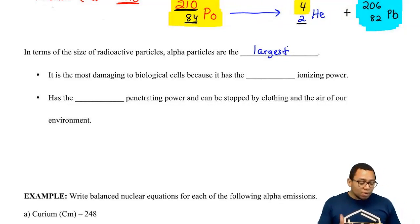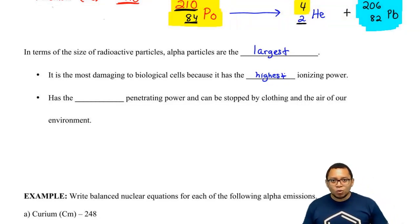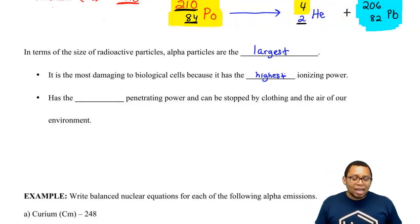It is the most damaging to biological cells because it has the highest ionizing power, which means that if you got it into your body, it would shred your insides. It would irradiate all of your biological cells. A person who is exposed to an alpha particle internally has a very low chance of survival.